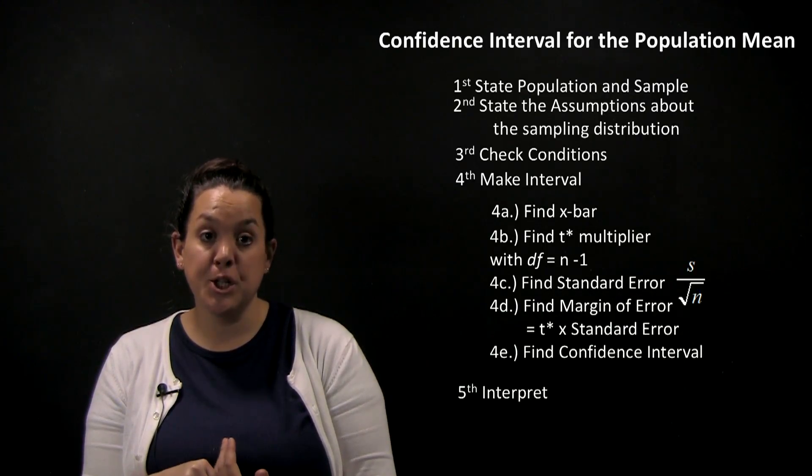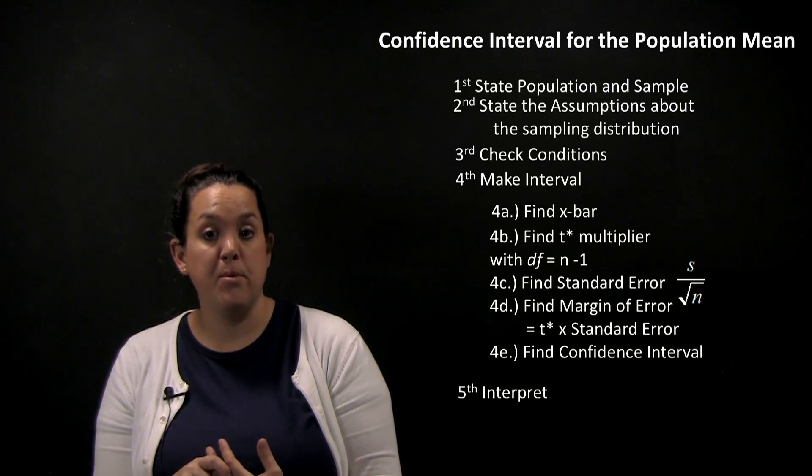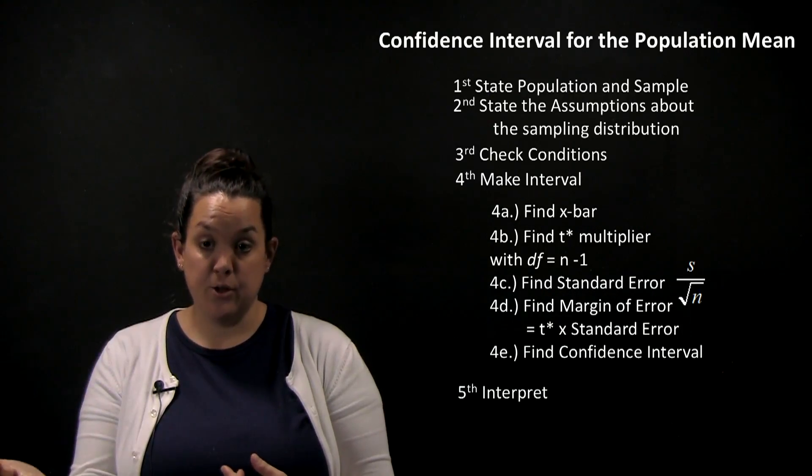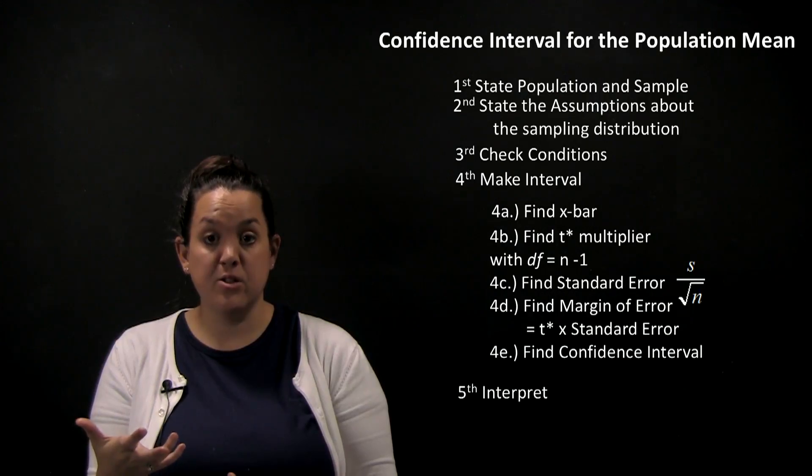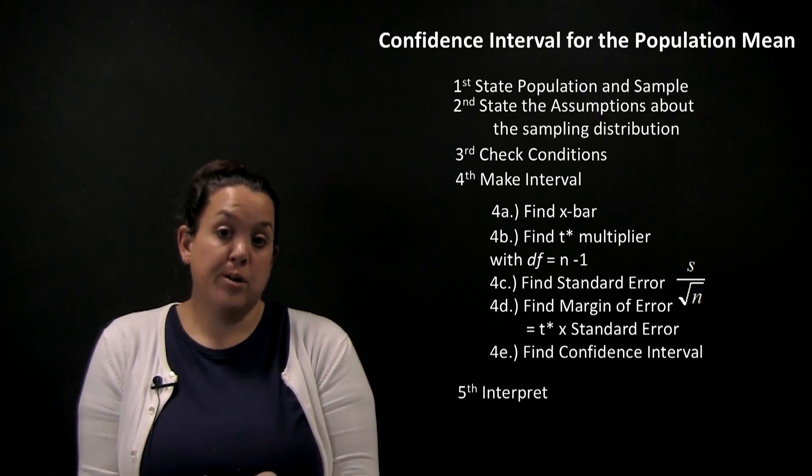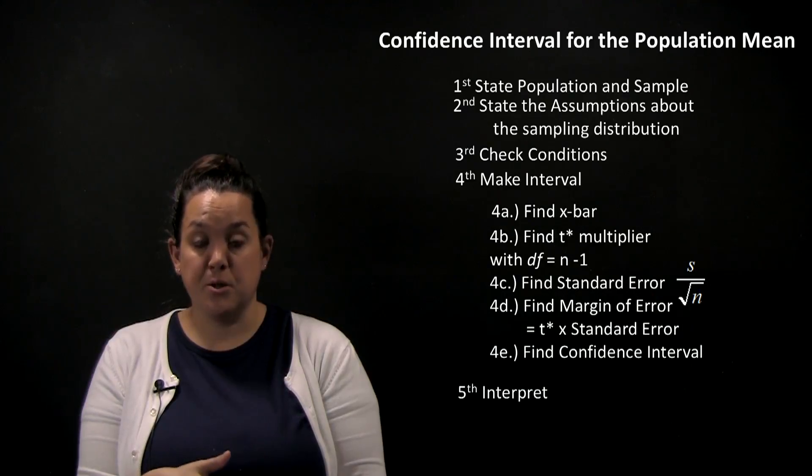Today we're continuing our discussion on the confidence interval for one population mean. We've looked at the generic formula and this new distribution that we're using, the t-distribution. Now we are going to talk about the steps for calculating a confidence interval.